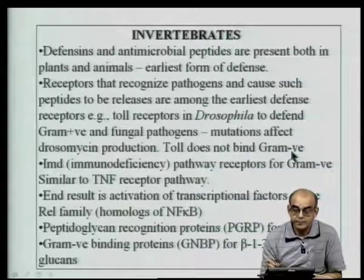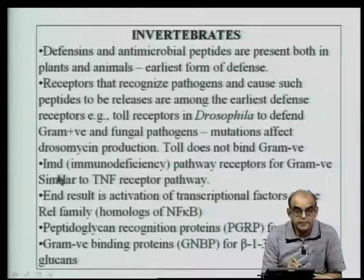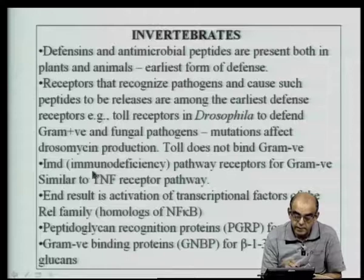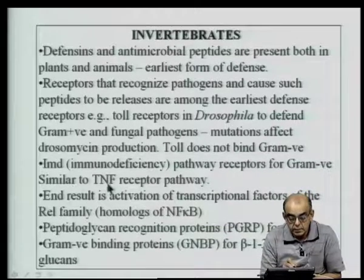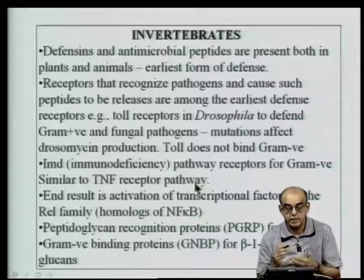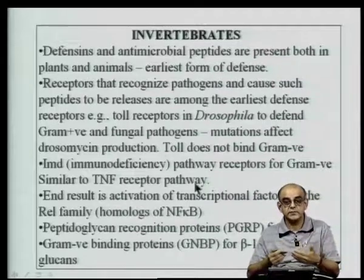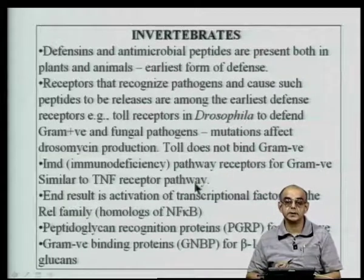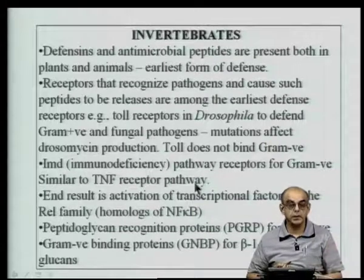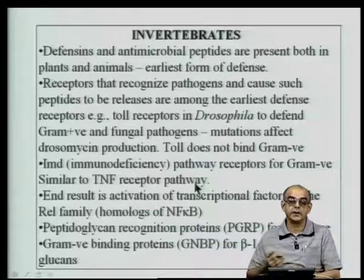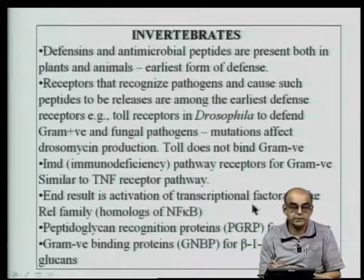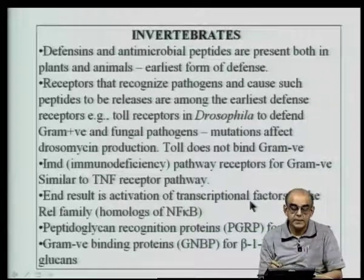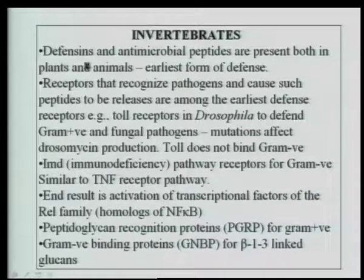Toll does not bind to gram-negative organisms in Drosophila; instead there is another mechanism called the IMD — immunodeficiency pathway — which has receptors for gram-negative bacteria and is similar to the tumor necrosis factor receptor pathway in higher mammals. The end result of all these pathways is the activation of transcriptional factors, which activate various genes. In primitive insects, this results in the induction of genes giving rise to antimicrobial peptides, whereas in higher mammals it induces cytokines that activate phagocytes to phagocytose bacteria.